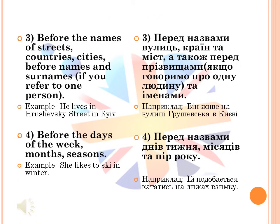We use zero article before the names of streets, countries, cities, and before names and surnames if you refer to one person. For example: 'He lives in Khrushchevsky Street in Kyiv.'